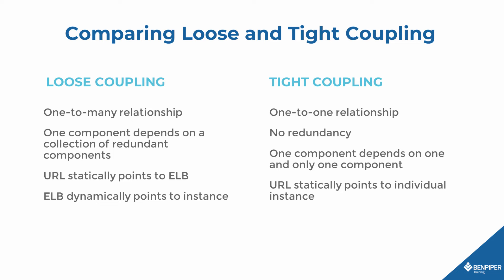Another way of looking at this is static versus dynamic. Tight coupling is static — one URL statically points to one instance. In loose coupling, the URL statically points to the ELB, but the ELB dynamically selects one instance from a collection of redundant instances.